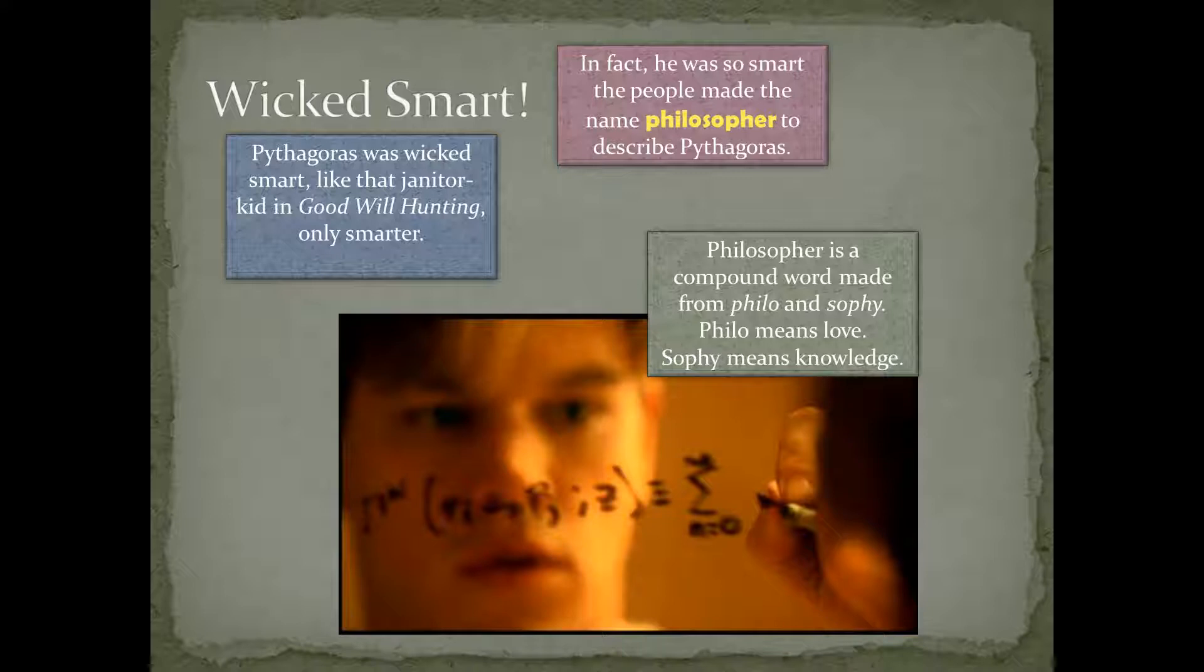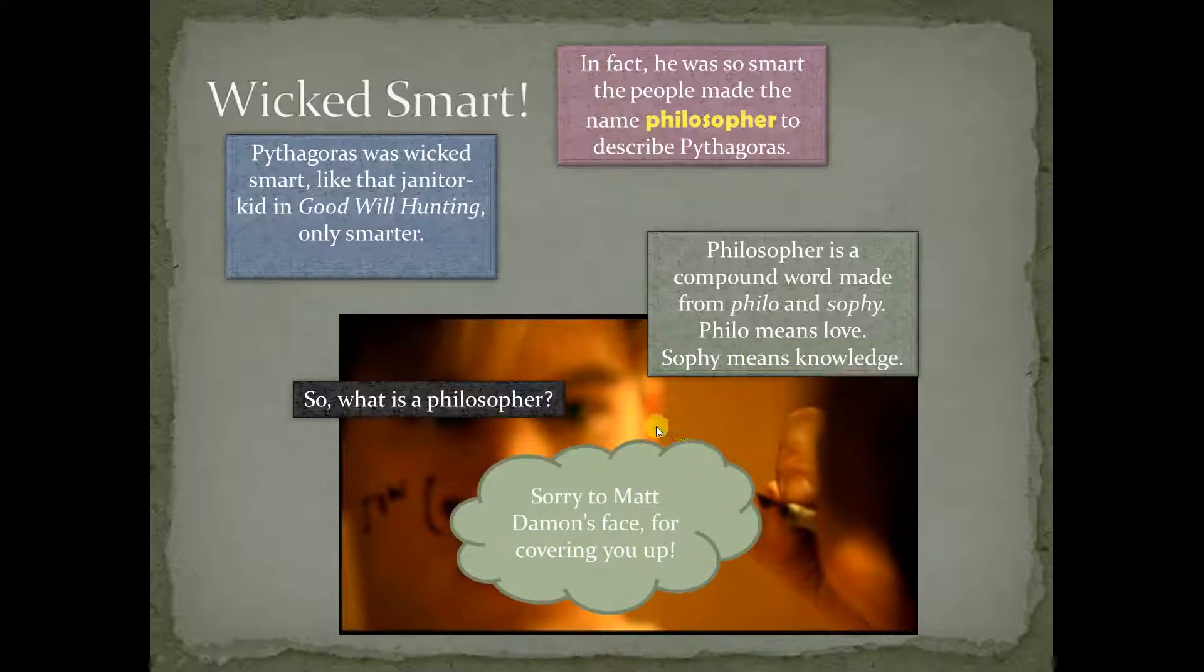Philosopher is a compound word. Philo and Sophie. Philo is love, Sophie is knowledge. So yeah, I think a philosopher would be somebody that loves knowledge. Sorry, Matt Damon, covering up your face there.